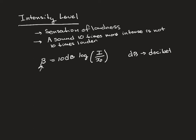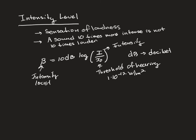So this β here stands for intensity level. And so you cannot use intensity and intensity level interchangeably, so please make sure you're looking at units. So this is intensity. And this here is the threshold of hearing, which is the 1 times 10 to the minus 12 watts per meter squared we discussed earlier.